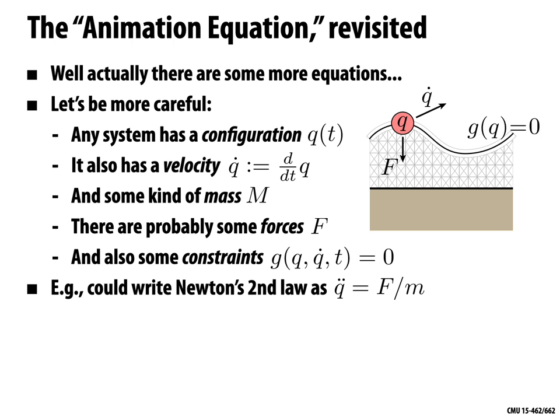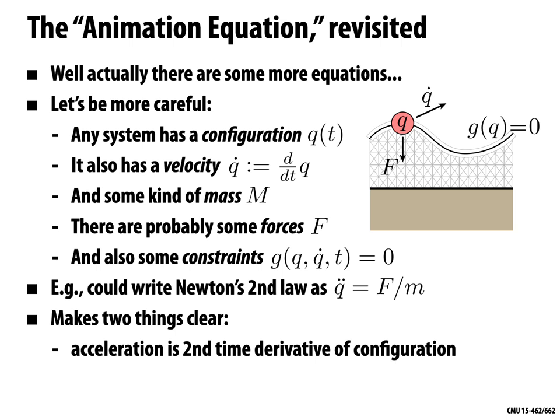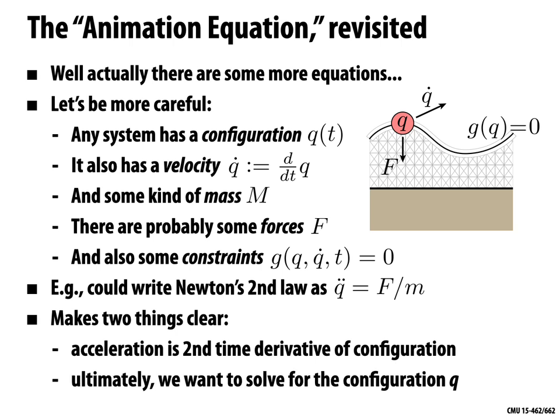The double dots mean we're taking two time derivatives; likewise, velocity is q-dot for one time derivative. Writing things this way makes clear that acceleration is the second time derivative of the configuration — if we just write f equals ma, we might forget that. It also reminds us that ultimately we want to solve for the configuration q. If we know the state of the system at every moment in time, we have an animation: we can generate it by marching along in time, looking up the configuration, plugging it into our renderer, and generating a beautiful image. That sequence of frames generates our animation.